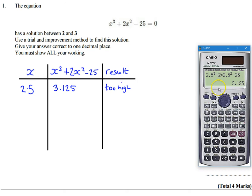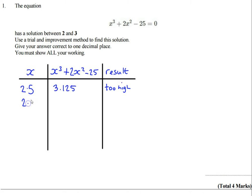So I'm going to go for 2.4, so let's do 2.4³ + 2 × 2.4² - 25, and that gives us 0.344. So 2.4 gives us 0.344 which is higher than 0 so it's still going to be too high.